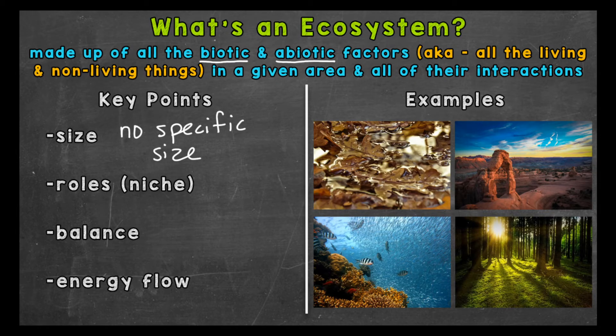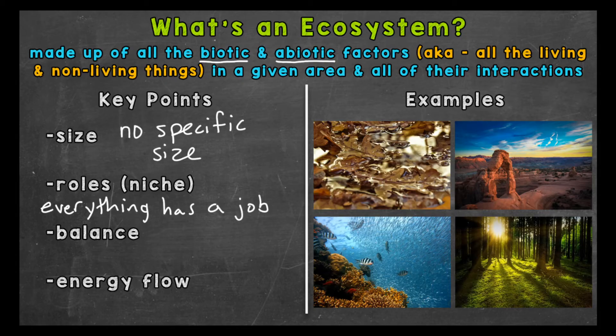Next, we have roles or niches, and that just means that everything has a job within the ecosystem. Whether it be producers, consumers, or decomposers — those are all biotic factors. Or abiotic factors, like water, temperature, the amount of sunlight, and air — those all play a role within an ecosystem as well. Everything has a role to play.